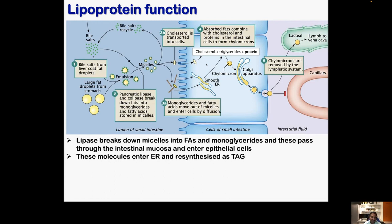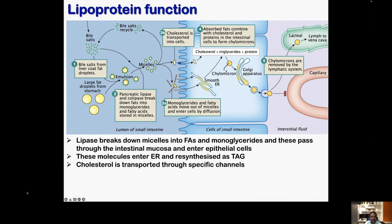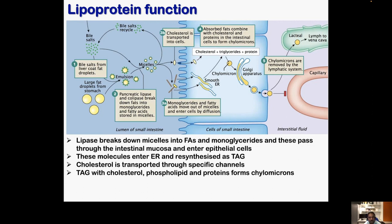Free fatty acids, because they are hydrophobic, can simply diffuse through the plasma membrane and come inside. Cholesterol needs a transporter — special cholesterol channels — to enter. Once inside the intestinal epithelial cells, the free fatty acids go to the endoplasmic reticulum and are re-synthesized as triacylglycerols. The intestinal epithelial cells also produce the apolipoprotein necessary to form chylomicrons. All these molecules — cholesterol, triacylglycerols, and apoproteins — join together and form chylomicrons.